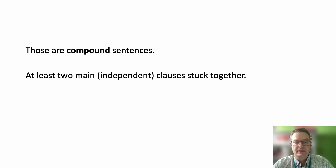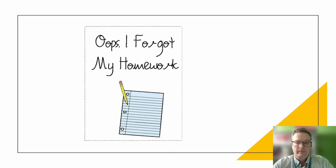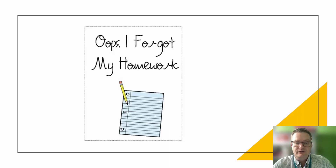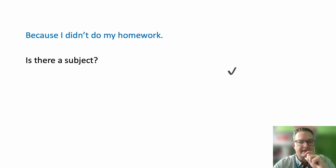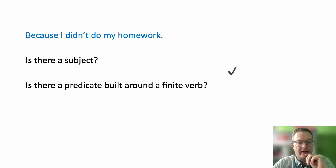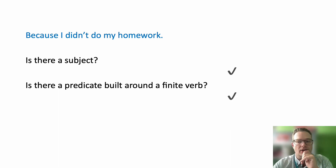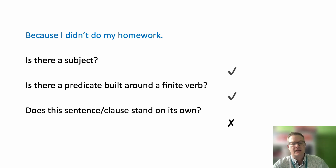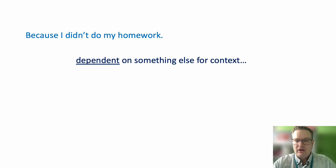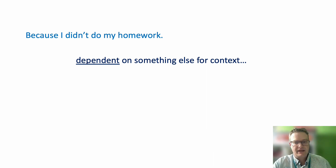The definition of a compound sentence is at least two independent clauses stuck together. What about if you've got a sentence like: because I didn't do my homework? Is this a clause? Do we have a subject? Yes — the subject is I. Is there a predicate built around a finite verb? Yes — the finite verb is did or didn't. So that's all good. But does this sentence work on its own? I'm going to say no. Because I didn't do my homework is always going to be in reference to something else. To be relevant, it needs to be connected to some other context. Because I didn't do my homework — I'm not allowed to go out. Or, my mum's really angry because I didn't do my homework. It's got to have something else to give it context. Because it's dependent on something else, it's a dependent clause.